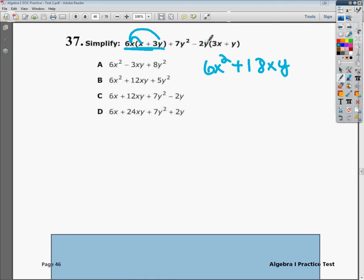Next, take negative 2y—we have to take the sign in front of it, otherwise it really messes us up later. Do the same thing we did on the first part. Negative 2y times 3x gives us negative 6xy. Notice I wrote those underneath each other because I had an xy here and an xy here. That way, I keep my like terms lined up with each other.